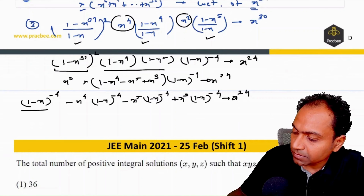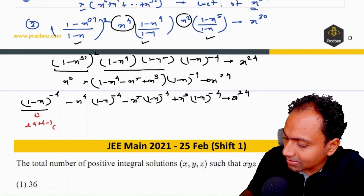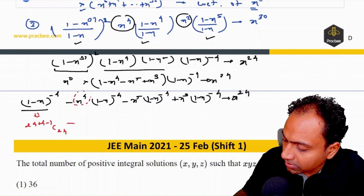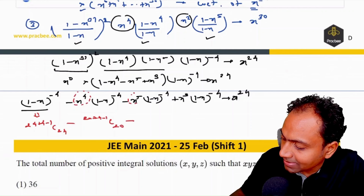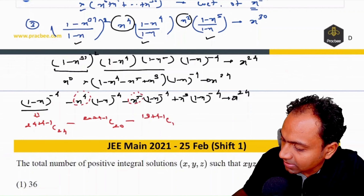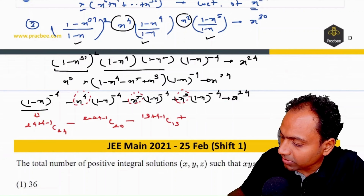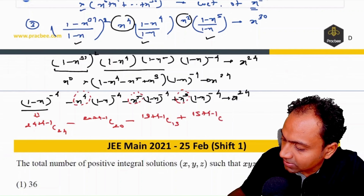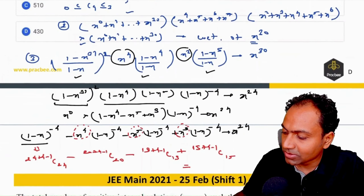From the first term, coefficient of x²⁴ is (24+4−1 C 24) = 27 C 24. From the second term (x⁴ used), we need x²⁰: (20+4−1 C 20) = 23 C 20 with a minus sign. Third term (x⁵ used), need x¹⁹: (19+4−1 C 19) = 22 C 19 minus. Fourth term (x⁹ used), need x¹⁵: (15+4−1 C 15) = 18 C 15 plus. Simplifying gives answer 430, option D.